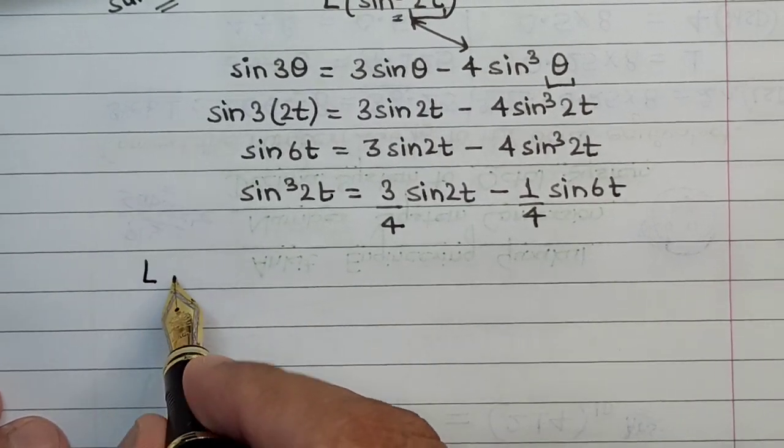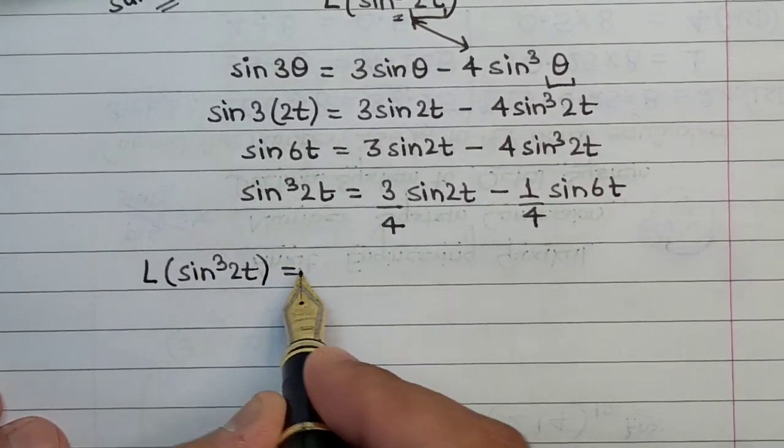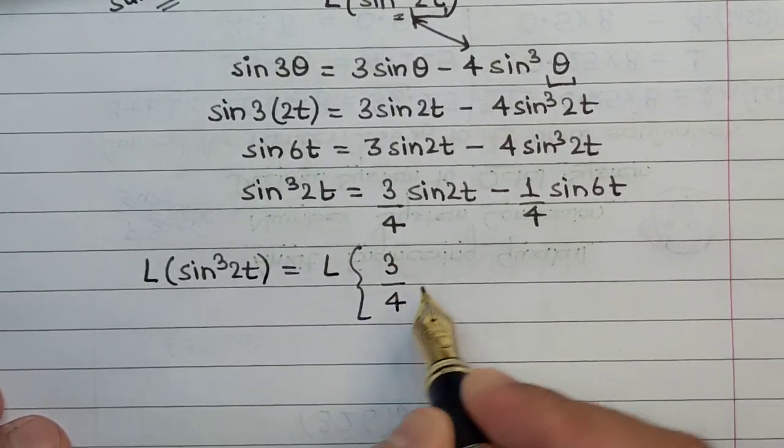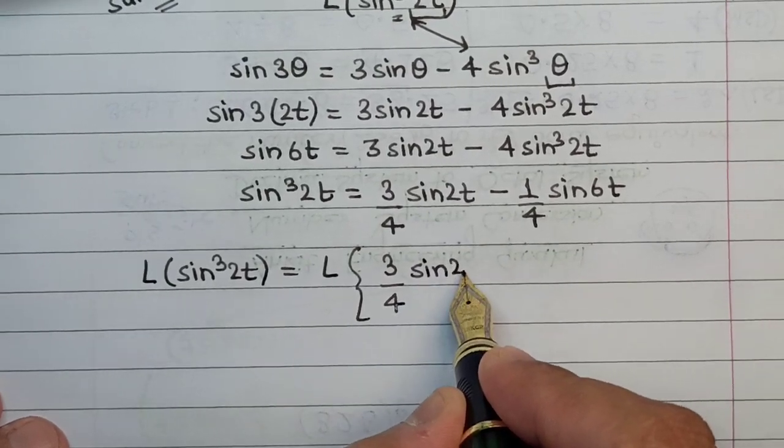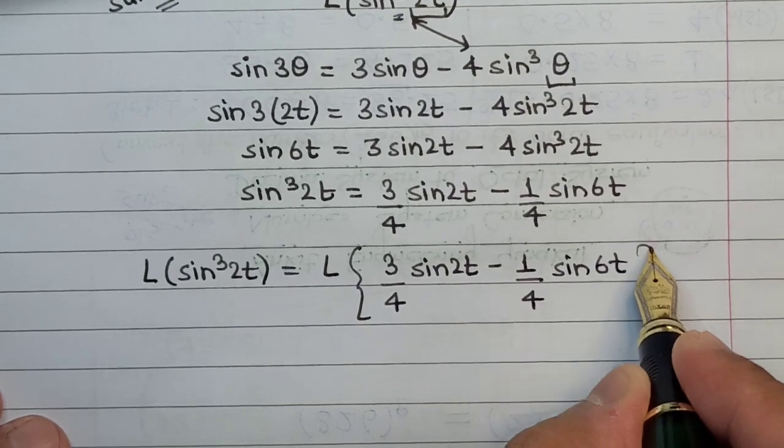The Laplace transform for sine cube 2t can be written as Laplace transform for 3 upon 4 sine 2t minus 1 upon 4 sine of 6t.